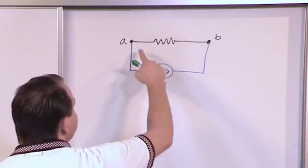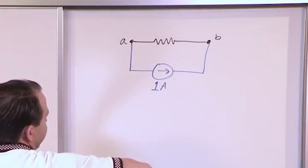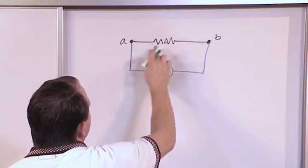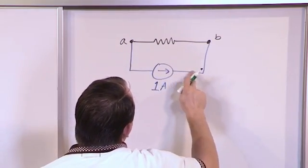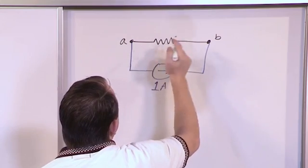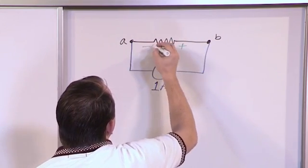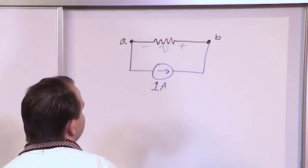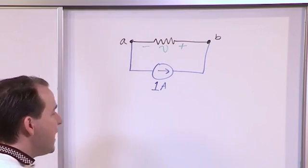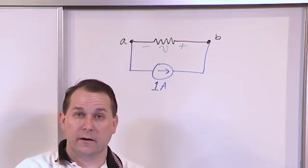Now, while this 1 amp is flowing through the resistor, you could measure the voltage drop across it. You know the current's flowing this way, so you know there's going to be a voltage drop across that resistor. And you can measure that with a voltmeter.